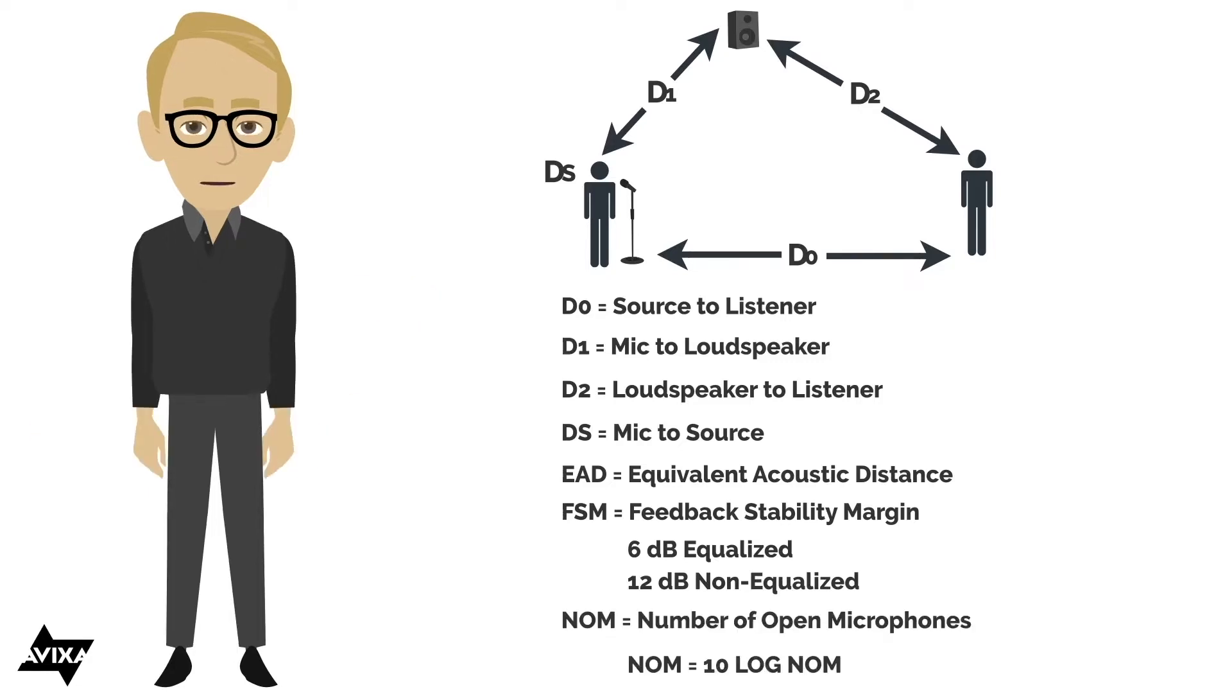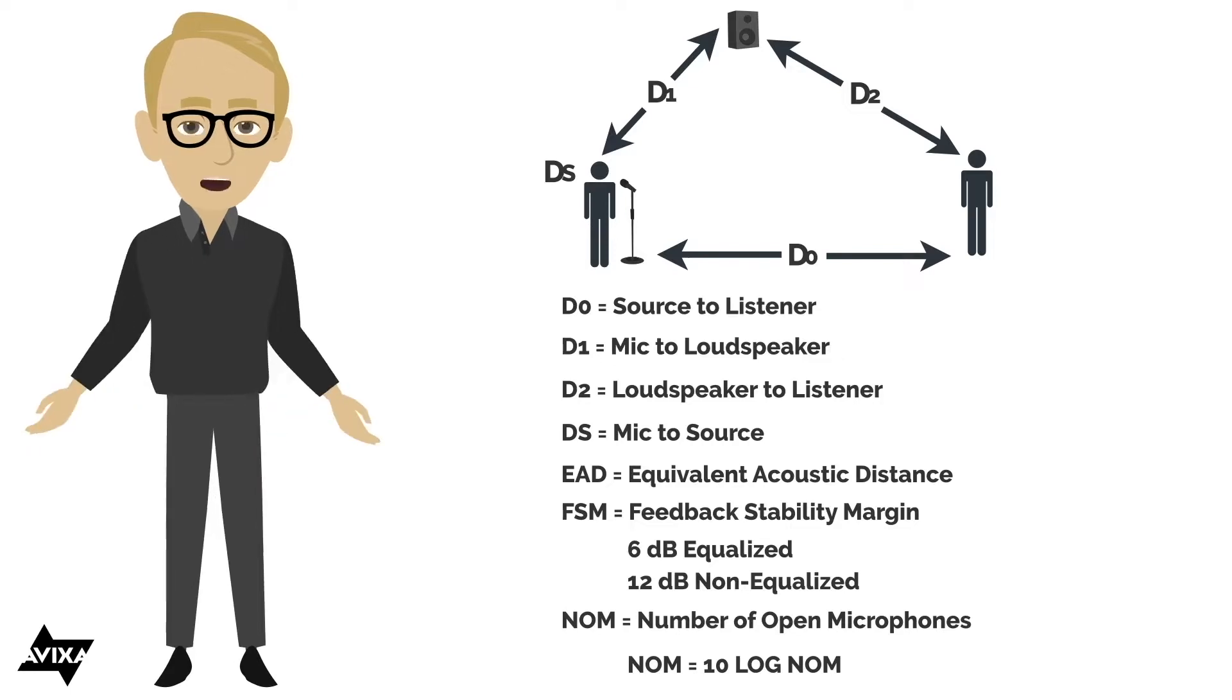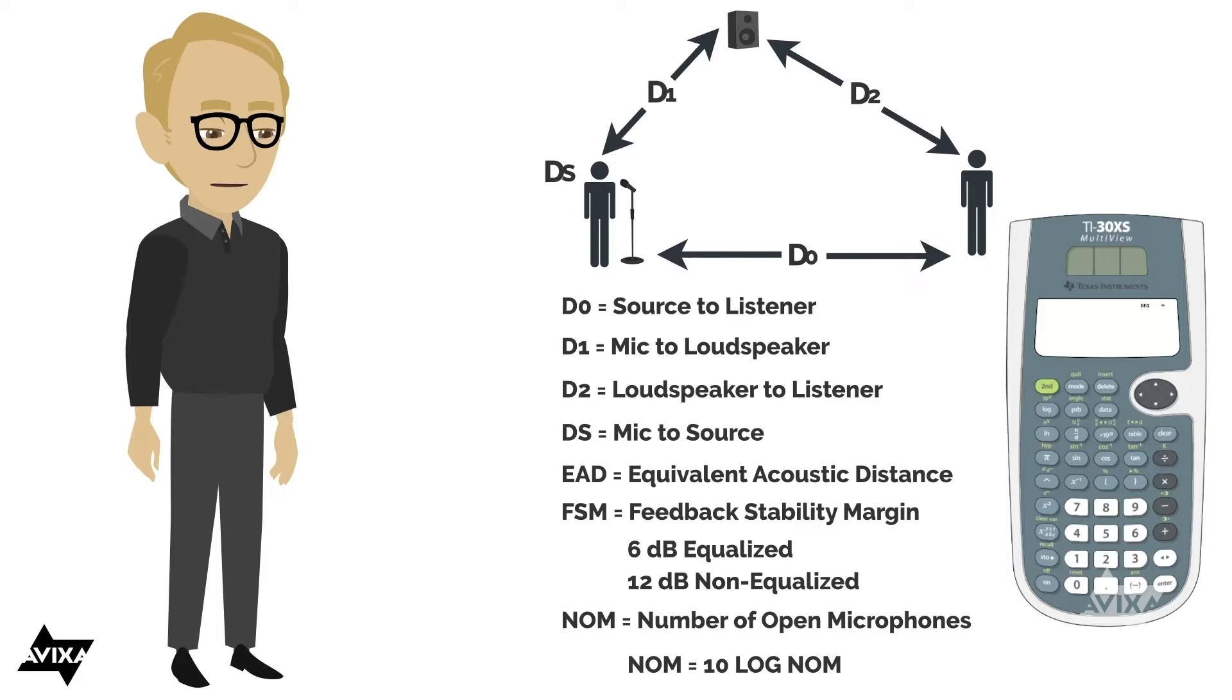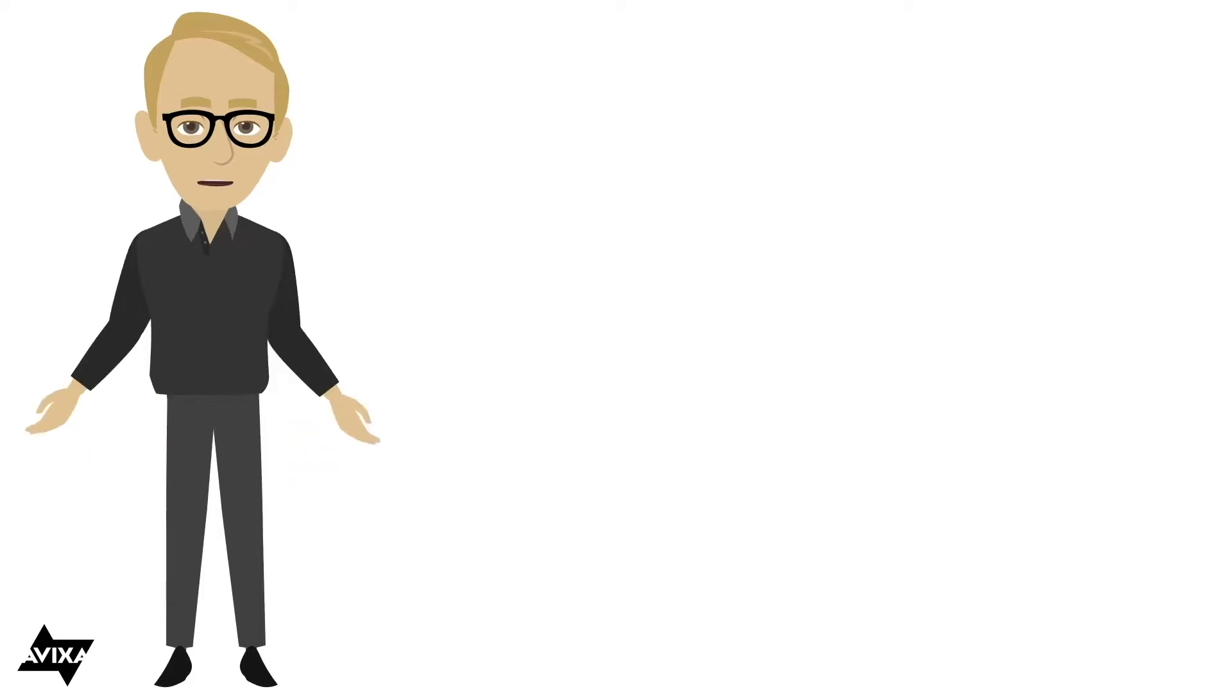And lastly, what we're going to factor in is NOM, which stands for number of open microphones. This is going to be a 10 log function. And since it's 10 log, that relates to power. What you find is every time I double the number of open microphones, I lose 3 dB before feedback. That's because you're doubling the acoustic power that's going into the system by opening up a second microphone. If we use an automatic microphone mixer, you'll find that the equivalent output is only one open microphone. If I had one open microphone, 10 times the log of one, you'll find the NOM in this case will be zero.